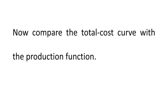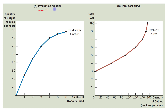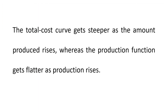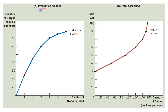Now compare the total cost curve with the production function. In the left panel (panel A) we have the production function, and in panel B we have the total cost curve. The total cost curve gets steeper as the amount produced rises, whereas the production function gets flatter as production rises.